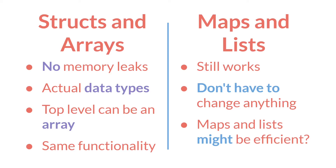And finally, you get all of these benefits without any real loss in functionality. In 2.31 they added struct accessors, the ability to remove variables from structs, and a bunch of array functions. This means that now structs and arrays can do basically everything that lists and maps can do.